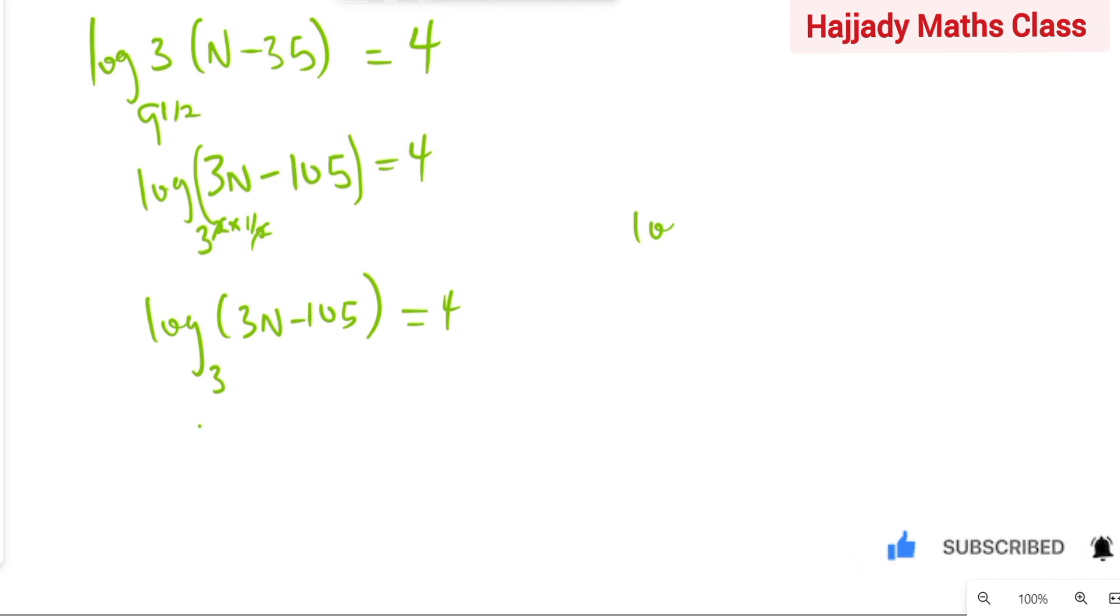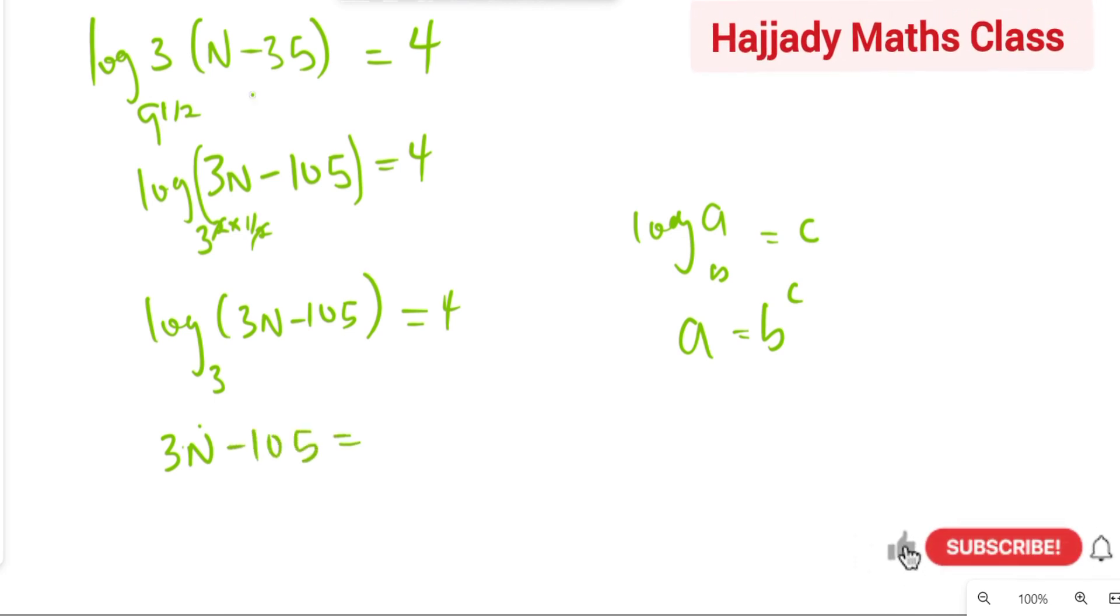So, don't forget the rule of logarithm that says log a into base b equals c. This is going to give us a equals b raised to power c. So, here we have a to be equals to 3N minus 105. So, we have 3N minus 105 equals b, which is the same as 3, the base, raised to power 4.